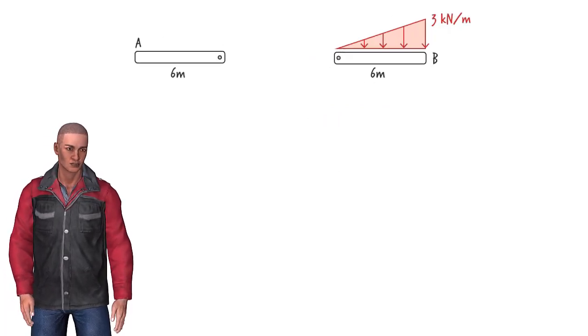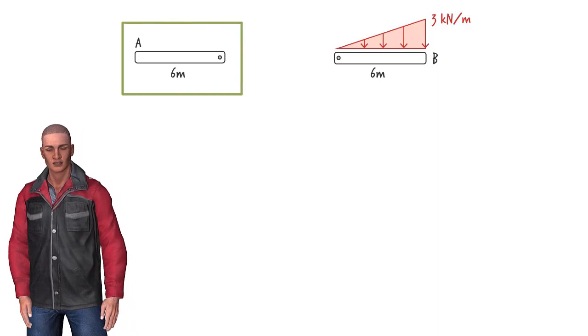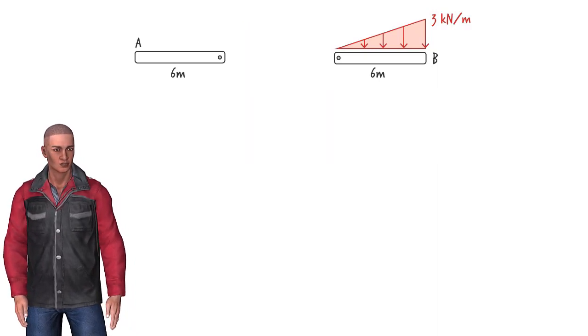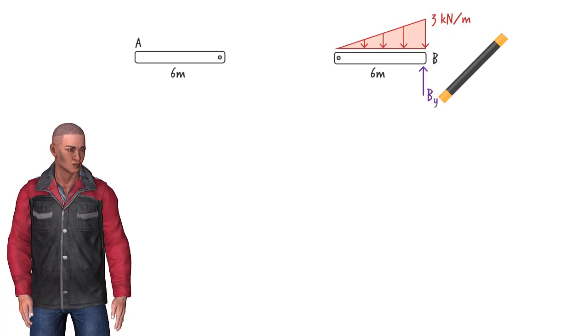Since there is an internal hinge in the beam, we need to separate the left and the right segments. Then draw the free body diagram for each part.